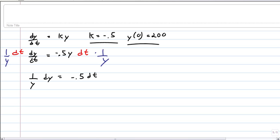You can integrate both sides. It's kind of nice keeping the constant on the right hand side, the negative 0.5. So natural log absolute value of y equals negative 0.5t plus c.